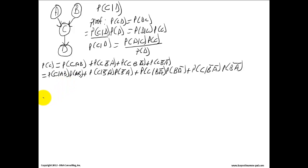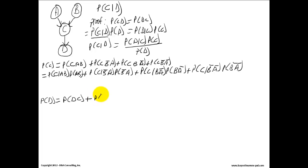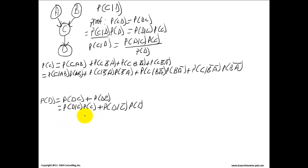Then for the probability of D, using the total law of probability, probability of D equals probability of D,C plus probability of D,C-hat. Breaking this down: probability of D,C is probability of D given C times probability of C, plus probability of D given C-hat. And probability of D given C equals probability of C given D times probability of D divided by probability of C.